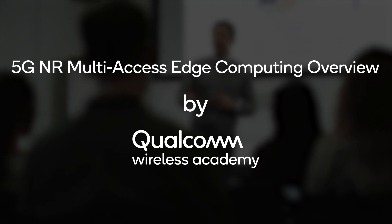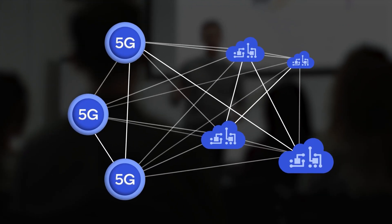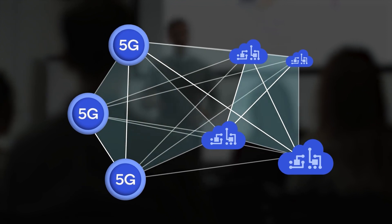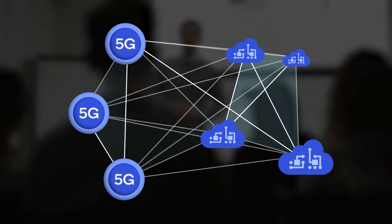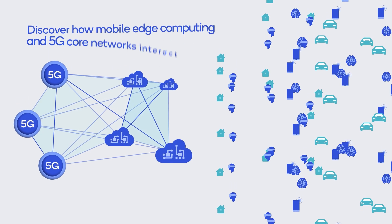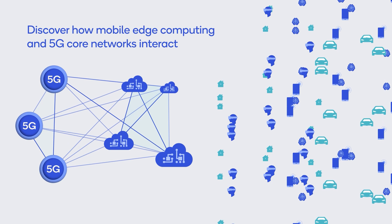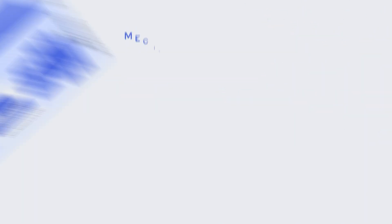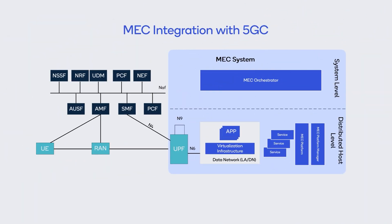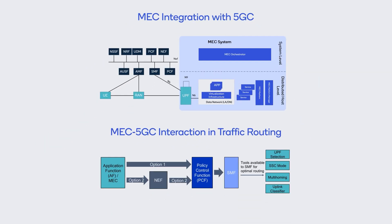Qualcomm Wireless Academy has developed a unique course to help you connect the dots between mobile edge computing and the significance of 5G connectivity as a key enabler. During this course, we will discover how mobile edge computing and 5G core networks interact to perform user plane traffic routing, and explore the tools available with session management entities within 3GPP networks that influence traffic movement.